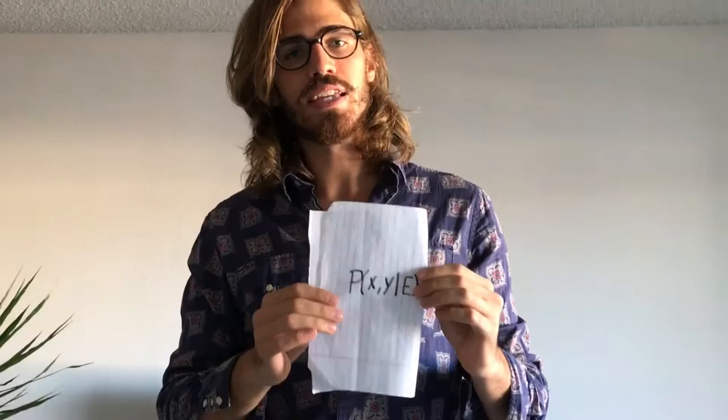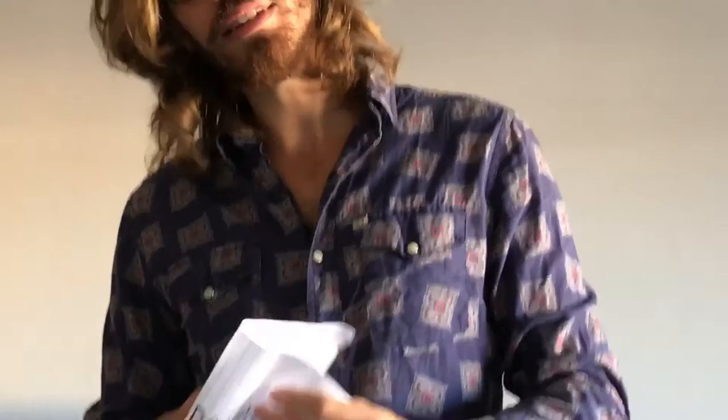Sometimes the belief network can get very complex and large, and it might be hard to determine if two random variables are conditionally independent. Let's look at the joint distribution of Xi given a set of evidence nodes that we will call E. This relation is equal to the probability of X given E times the probability of Y given E, if and only if X and Y are d-separated through E.